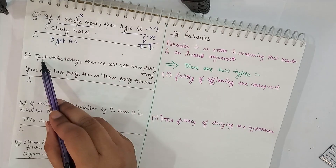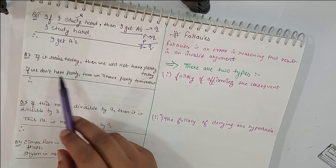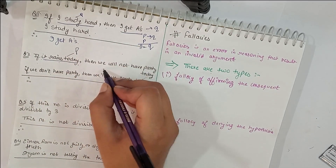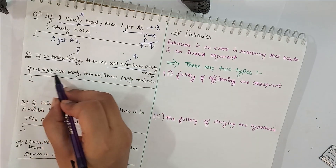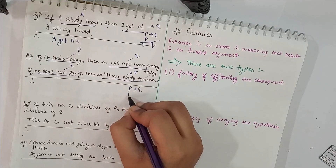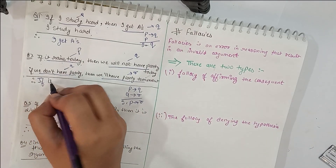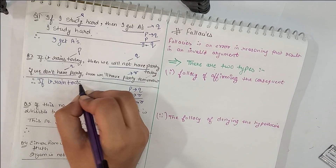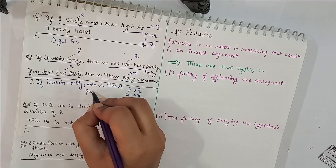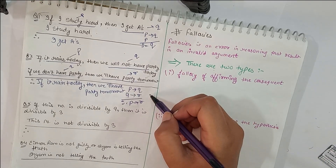Question 2 says: if it rains today then we will not have a party today; and if we don't have a party today then we will have a party tomorrow. Let P = it rains today, Q = we will not have a party today, R = we will have a party tomorrow. This gives P implies Q, and Q implies R, so by Hypothetical Syllogism, the conclusion P implies R is: if it rains today then we will have a party tomorrow.